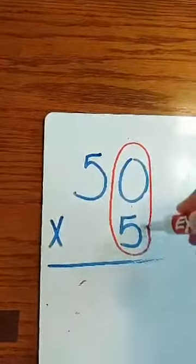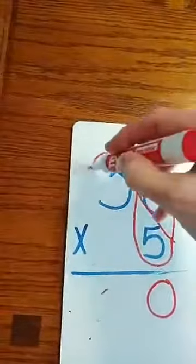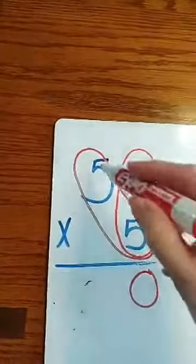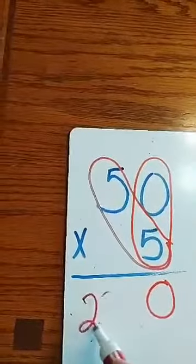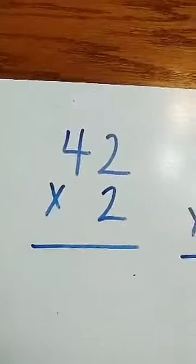multiply the 1s place. 5 times 0 is 0. Now multiply the 10s place. 5 times 5 is 25. 250. Okay, let's try another one.